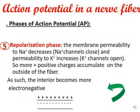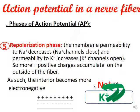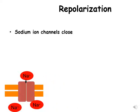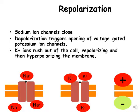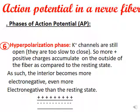During repolarization, the membrane permeability to Na+ decreases, so Na+ channels close. Permeability to K+ increases, so K+ channels open and more positive charges accumulate on the outside of the nerve fiber, making the interior more electronegative. Depolarization triggers the opening of voltage-gated potassium ion channels, and K+ rushes out of the cell, repolarizing and then hyperpolarizing the membrane.